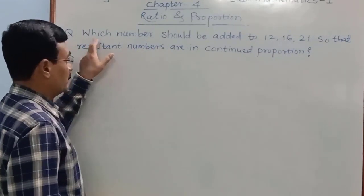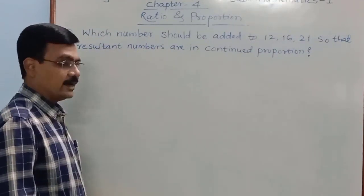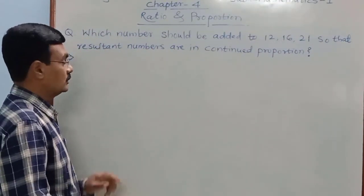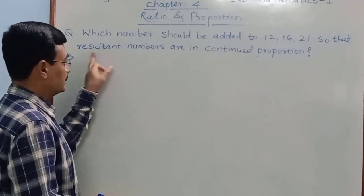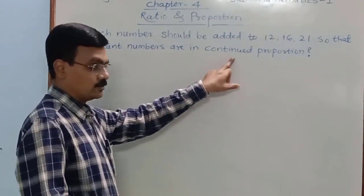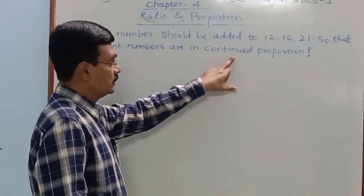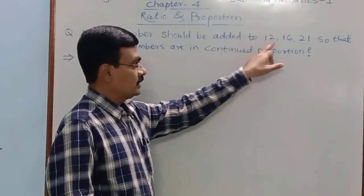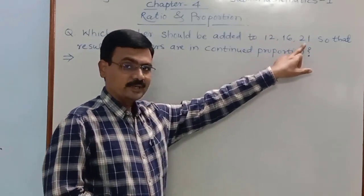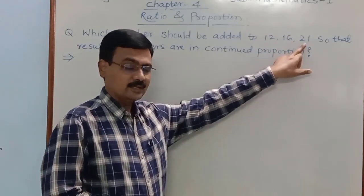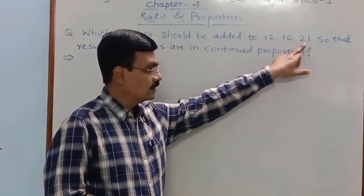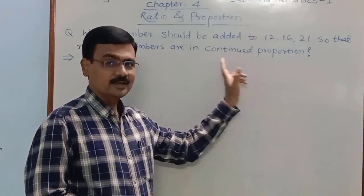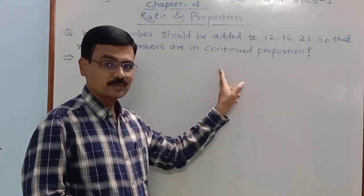The question is: which number should be added to 12, 16, and 21 so that the resultant numbers are in continual proportion? That same number is added to each of 12, 16, and 21, and then the resulting numbers should be in continual proportion.